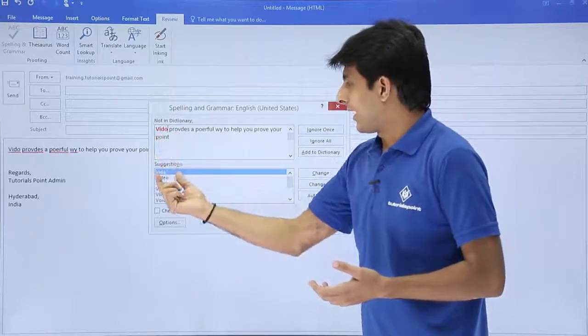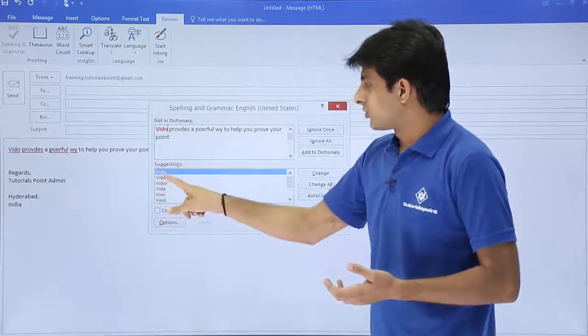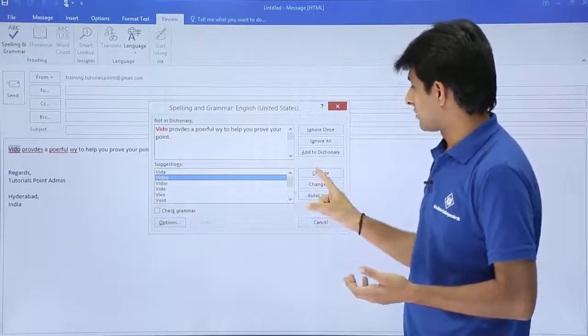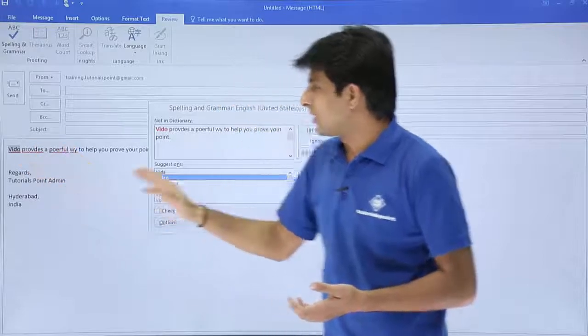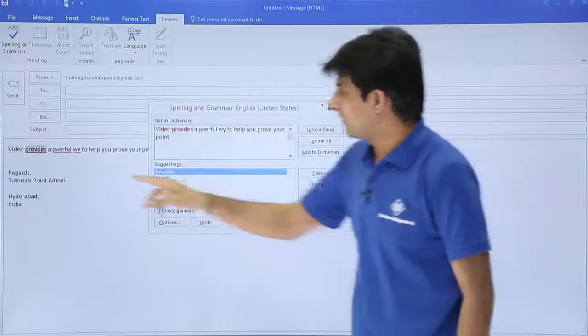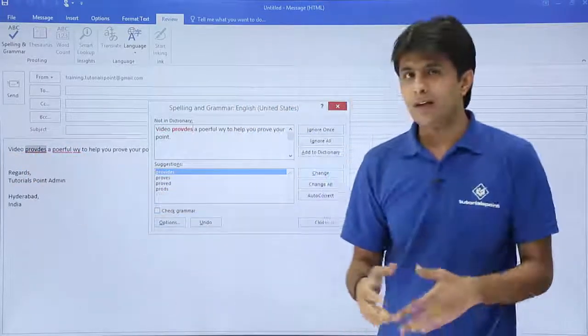It says this is the word and these are the suggestions which are given here. I think 'video' is the correct one, so I can just click on change. The red underline will be changed to normal text.